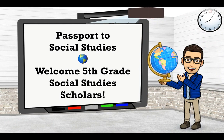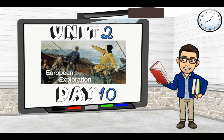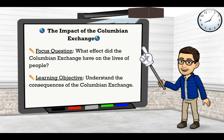Welcome, 5th grade social studies scholars, to another Passport to Social Studies video. My name is Mr. Giordano and I'll be your teacher for today's video. Today we will be looking at our Unit 2 Day 10 lesson. Our lesson title is The Impact of the Columbian Exchange. Our focus question for today is: what effect did the Columbian Exchange have on the lives of people? Our learning objective is to better understand the consequences of the Columbian Exchange.